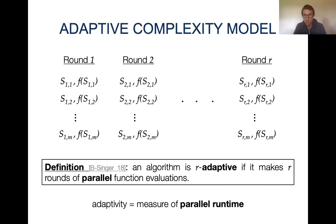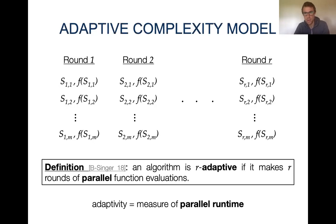So how do we measure parallelization? There is the adaptive complexity model that was recently introduced in the context of submodular maximization. The traditional measure of the efficiency of an algorithm is by measuring the total number of queries to the objective function. This model allows performing multiple function evaluations in parallel. We say an algorithm is R-adaptive if it consists of R sequential rounds where in each round the algorithm may perform polynomially many function evaluations.